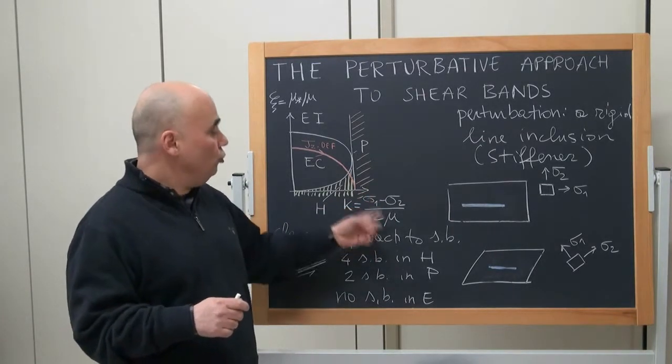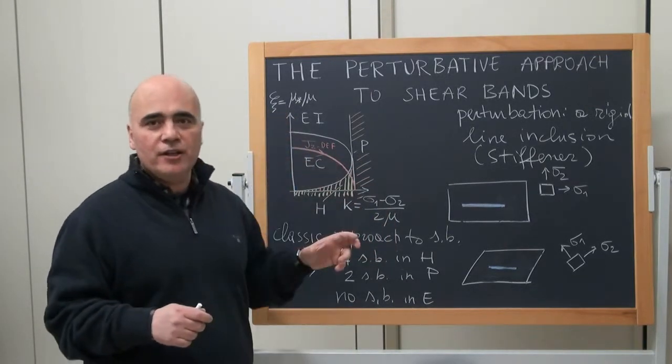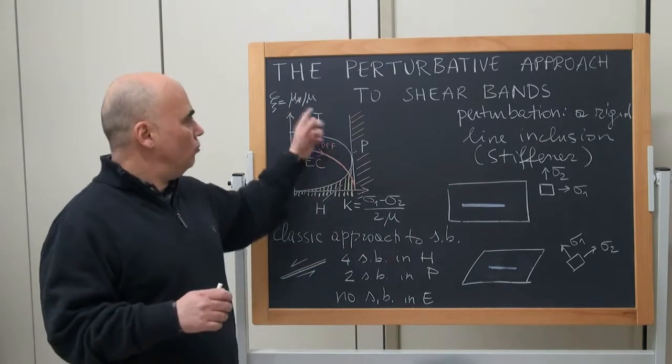Where in the horizontal axis there is the deviatoric state of plane stress, σ1 minus σ2, normalized with respect to the incremental shear modulus, and on the vertical axis there is the ratio between the two incremental shear moduli.